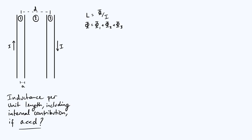Because magnetic flux is a surface integral of magnetic flux density, we need to know what the magnetic field produced by a wire is. To find that, we need to set up a coordinate system. I'll define a coordinate R pointing radially outwards from the center of the wire on the left. By symmetry, the field lines due to one wire wrap around in circles around the wire, so we can use Ampere's law to find expressions for the field.